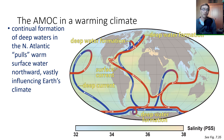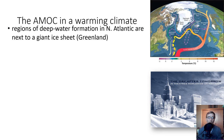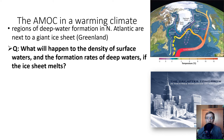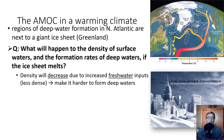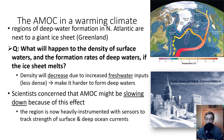Typically, continual formation of deep waters in the North Atlantic pulls warmer waters northward, vastly influencing Earth's climate. As the Greenland ice sheet — adjacent to these deep water formation zones — melts, freshwater input decreases surface water density, slowing deep water formation. Scientists are concerned AMOC is slowing because of this effect. The region is now heavily instrumented with sensors to track the strength of surface and deep ocean currents, and changes are already being observed.